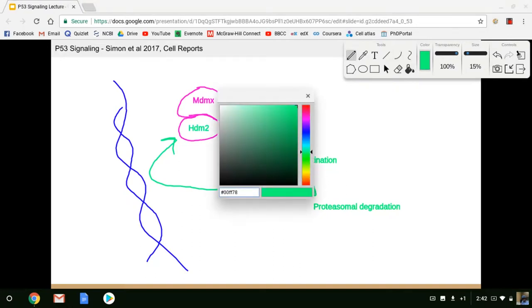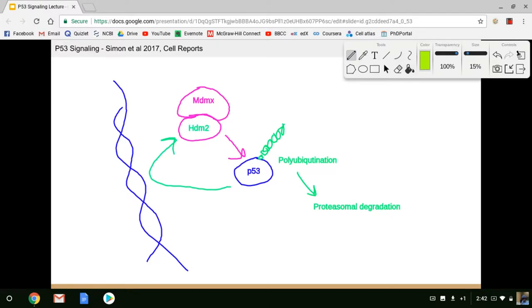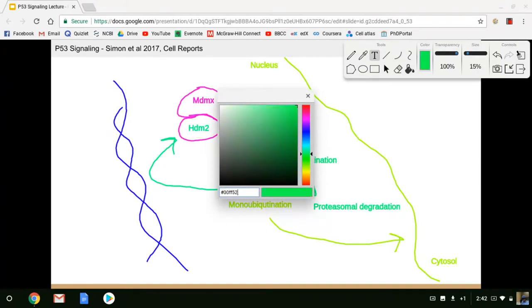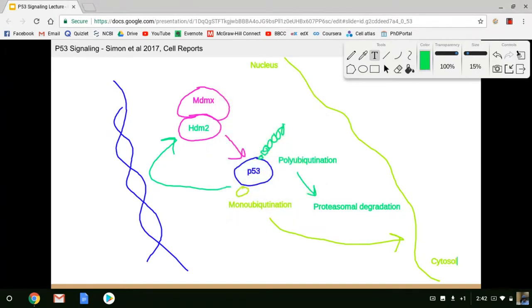What's interesting, and this is how p53 gains a cytoplasmic presence, is that under certain conditions, it's not really understood exactly how, but monoubiquitination actually leads to the export. So let's say this is the nuclear membrane, this is the nucleus. It actually leads to the export of p53 into the cytoplasm. It's not necessarily understood why sometimes it's polyubiquitination and sometimes HDM2 leads to monoubiquitination, but it could be the influence of deubiquitinases that maybe favor the monoubiquitination. But regardless, when p53 is monoubiquitinated, it's exported into the cytosol.